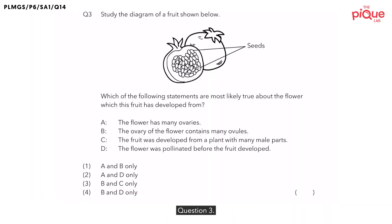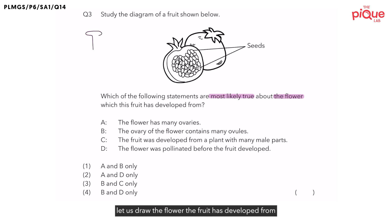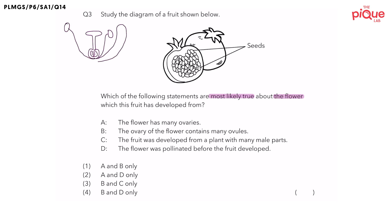Question 3. Study the diagram of a fruit shown below. Which of the following statements are most likely true about the flower which this fruit has developed from? Since the diagram has already drawn the fruit for you, let us draw the flower the fruit has developed from on the left hand side.